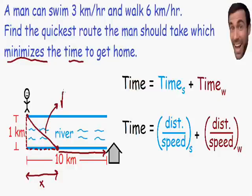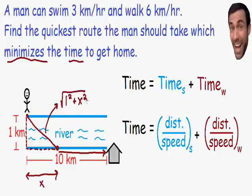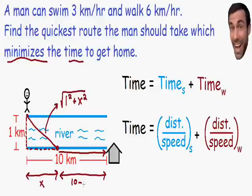Using the Pythagorean theorem, the swimming distance is the hypotenuse: the square root of one squared plus x squared, which equals the square root of one plus x squared. Now for the walking distance: it's the horizontal distance from where he lands all the way to his house. The total horizontal distance is 10 kilometers, and if we subtract the horizontal swimming distance x, the walking distance equals 10 minus x.